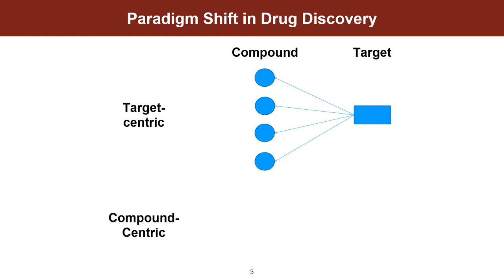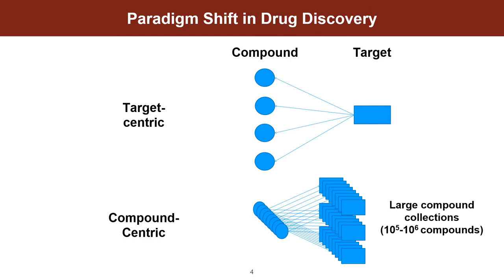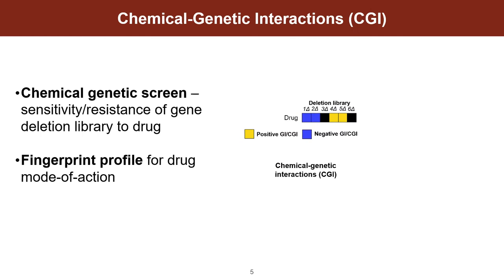An alternative approach would be compound-centric drug discovery. What that means is that you start with a compound and understand precisely what target it hits. If you can build this method for one drug and then scale that same method across multiple drugs, then we can begin to rapidly annotate large compound collections. The method in question involves understanding chemical genetic screens, which involve a genome-wide deletion library and then interrogating each gene deletion and whether it confers sensitivity or resistance in the presence of the drug. You begin to build these fingerprint CGI profiles that tell you something about the drug mode of action.